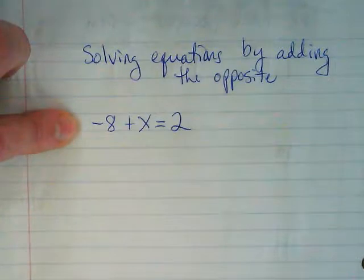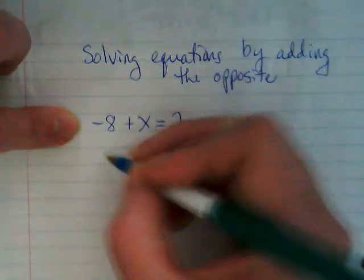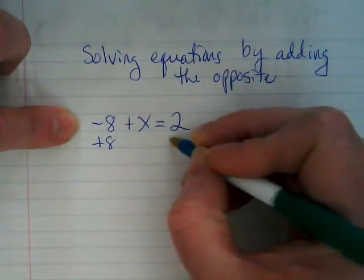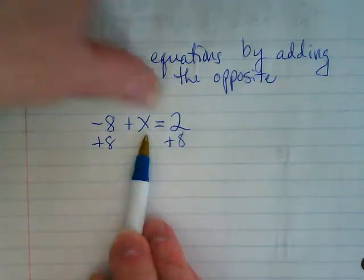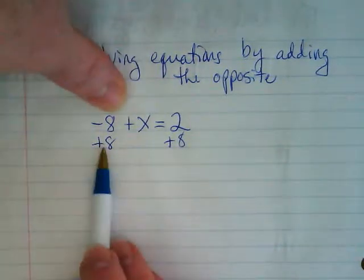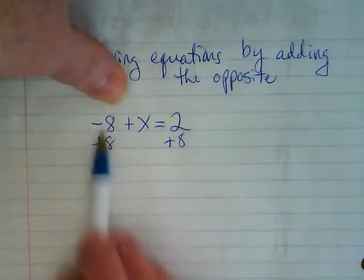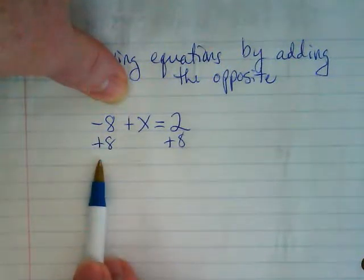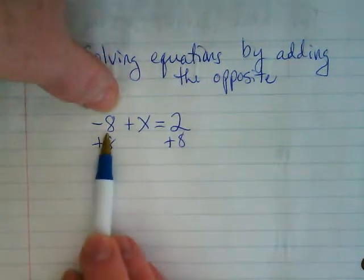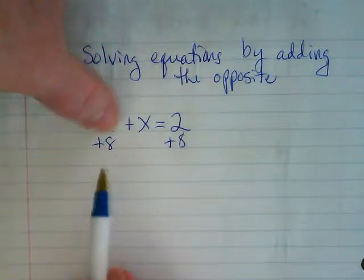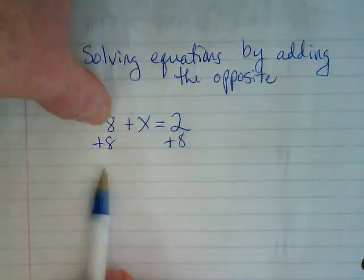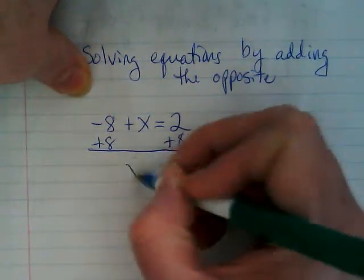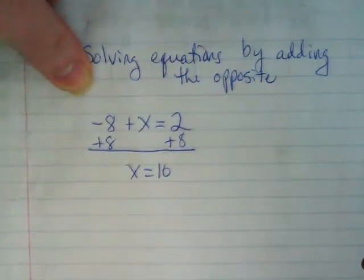So we're just going to add the opposite. What's the opposite of the negative 8? 8. Right. And the deal is we're trying to get the x by itself, so whatever the number is that's with there, with the x, we want to look at the number and do the opposite to it. This is a negative, which is really subtraction, so what are we going to add? The opposite to it. And I heard somebody right away say it's going to be 10. Doesn't that make sense?